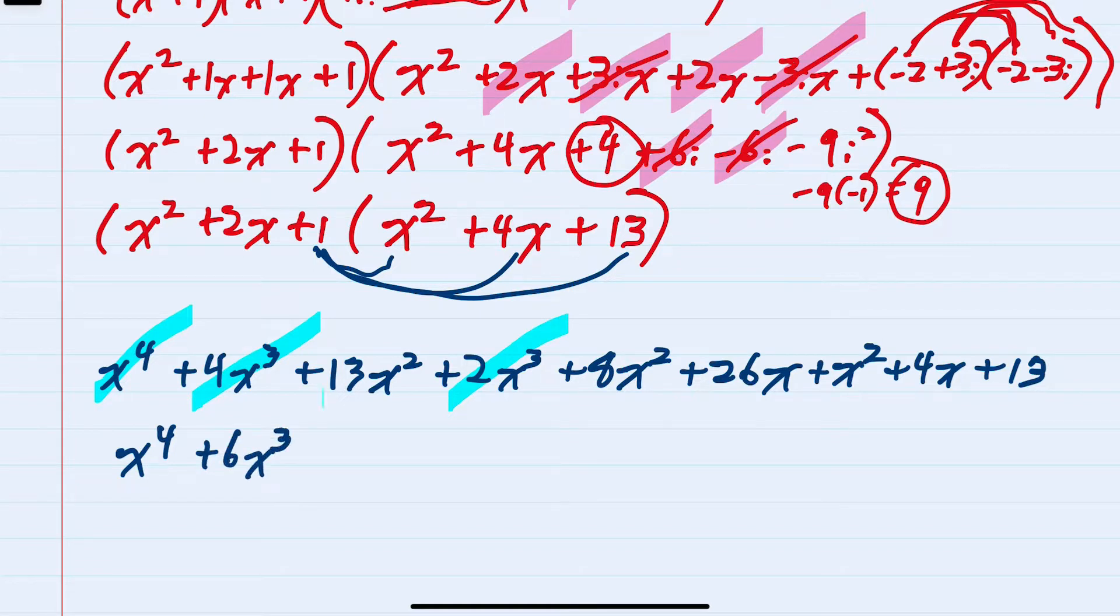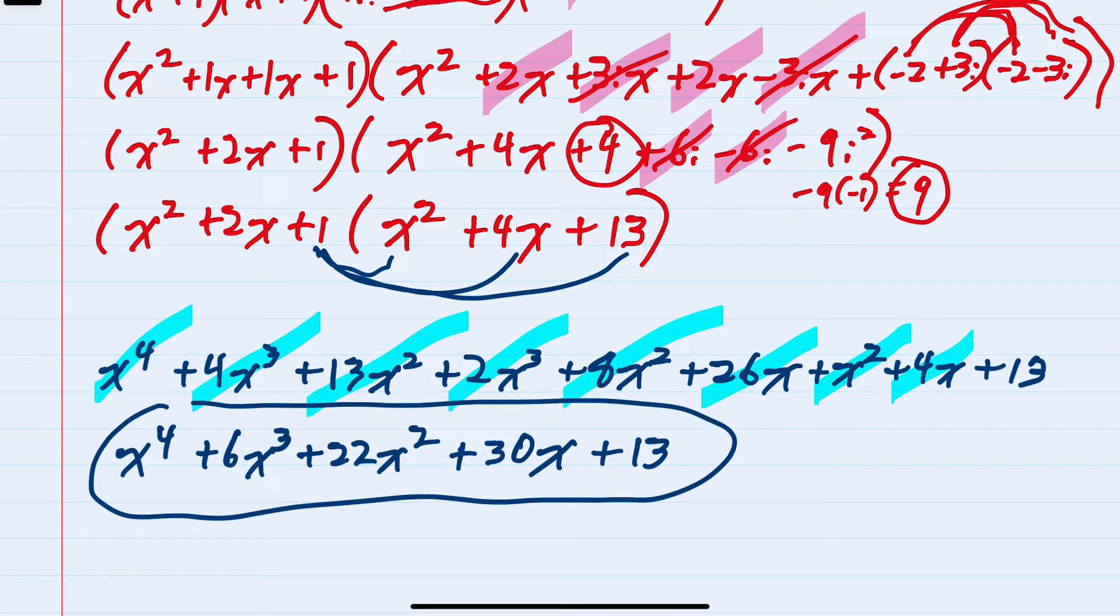For squared terms, I have 13x squared and 8x squared, so that would be 21x squared plus 1 more would be 22x squared. For x terms, I have 26 and 4, so those combine to be 30x, and our one constant, 13. So this would be our simplified polynomial that has all of the zeros that we're given.